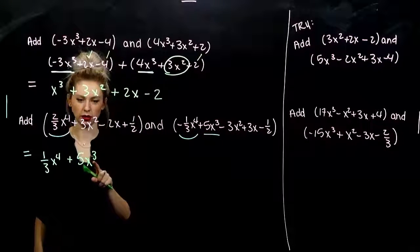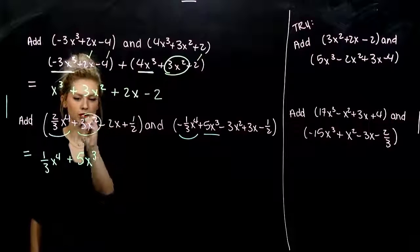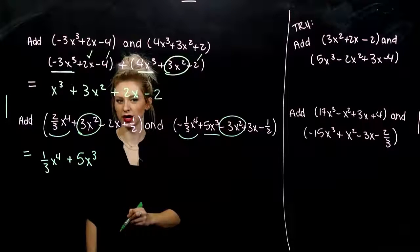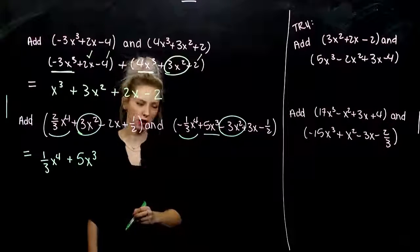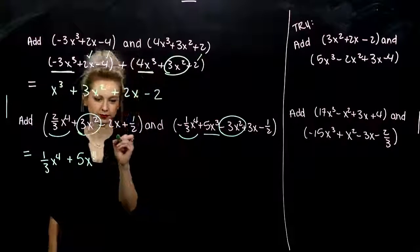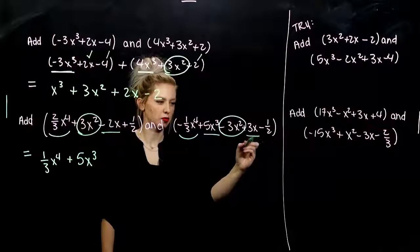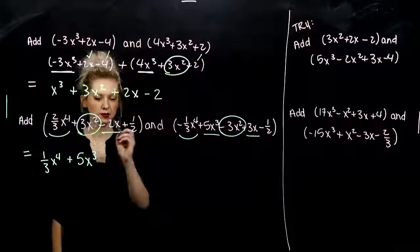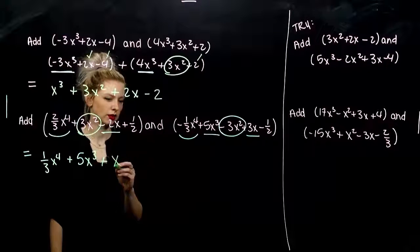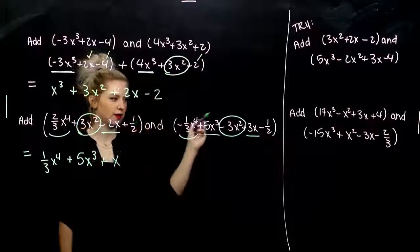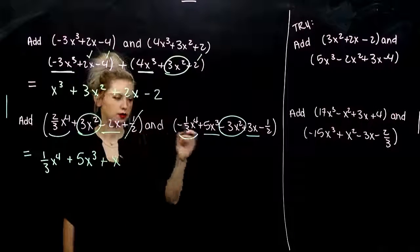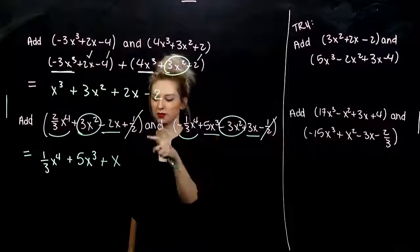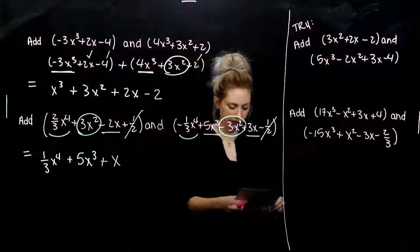Next power: squared. I've got 3x squared minus 3x squared — those are going to cancel and be gone. Then negative 2x and positive 3x added together gives me 1x. And I have positive 1 half and negative 1 half at the end — those cancel too. So adding these two polynomials simplifies a lot nicer when we combine like terms.